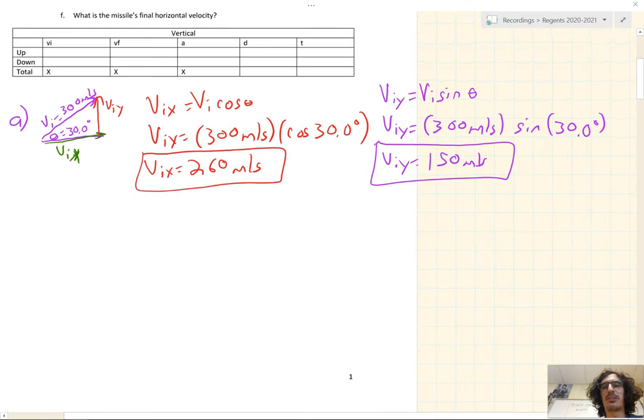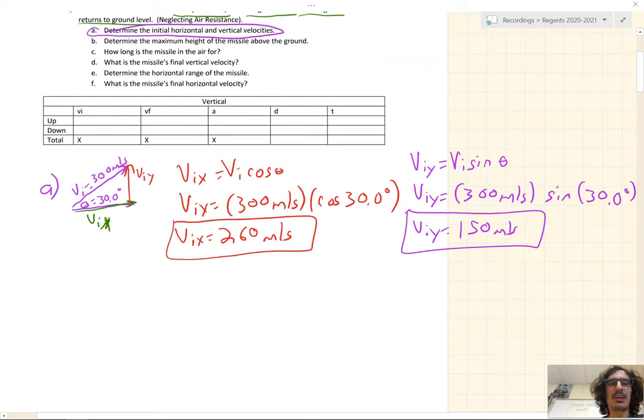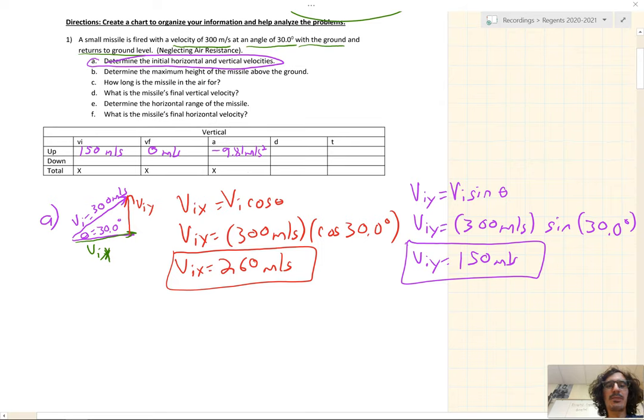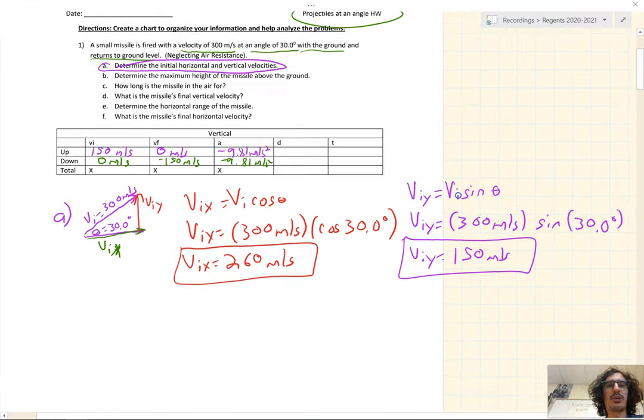Now that we have our VIs in a horizontal and vertical direction, let's look at the vertical chart. We know the velocity going up in the vertical direction is 150 meters per second. The velocity at the top is 0 meters per second. The acceleration due to gravity is negative 9.81 meters per second squared. When the object goes down, from the top to the bottom, VI is 0 meters per second. VF is negative the initial vertical velocity, negative 150 meters per second. The acceleration is still negative 9.81 meters per second squared.